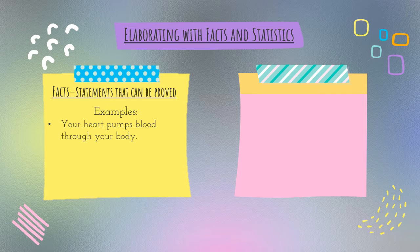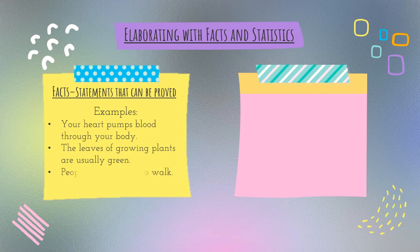You can study the human body and learn that a heart pumps blood. The leaves of growing plants are usually green. You can go outside, look at the color — that color is called green. Most plants are green; there are a few that are red or purple, but most of them are green. People use their legs to walk. The majority of people in the world don't walk on their nose or even on their hands — they use their legs. That's a fact.